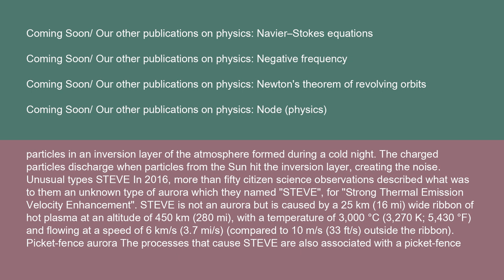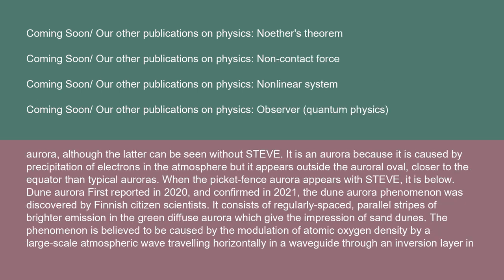In 2016, more than 50 citizen science observations described an unknown type of aurora which they named STEVE — Strong Thermal Emission Velocity Enhancement. STEVE is not an aurora, but is caused by a 25 km (16 mile) wide ribbon of hot plasma at an altitude of 450 km (280 miles), with a temperature of 3,000°C (5,430°F), flowing at a speed of 6 km per second, compared to 10 m/s outside the ribbon. The picket fence aurora, associated with the same processes as STEVE, is a true aurora caused by electron precipitation, appearing outside the auroral oval closer to the equator.